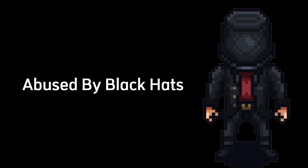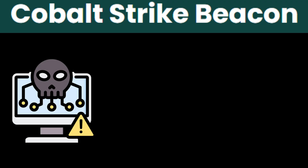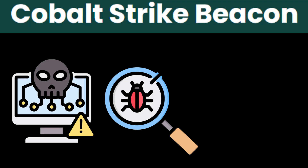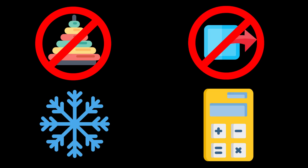Cobalt Strike. Used by red teams, abused by black hats. It's not just a tool — it's a full-blown command and control suite. With Beacon, hackers can run fileless attacks, evade detection, and persist on networks for months. This is the kind of tool that gets used in state-sponsored attacks. This isn't some script-kiddie playground. This is the real deal. No toys, no shortcuts. Just cold, calculated power.